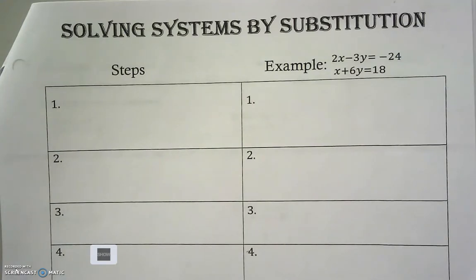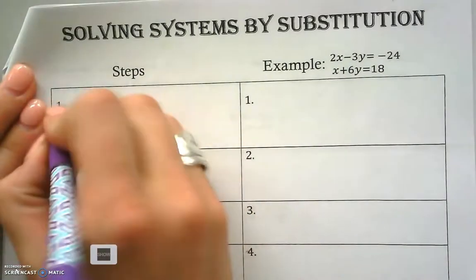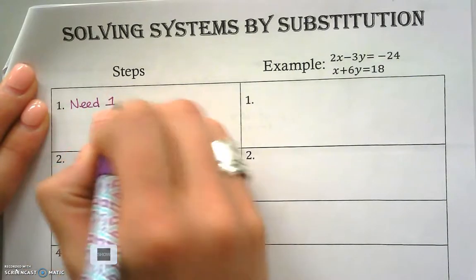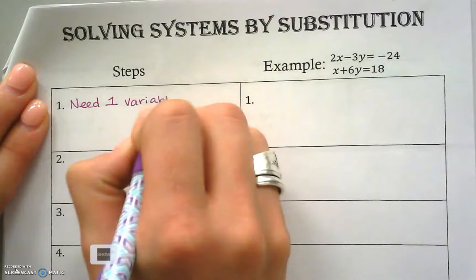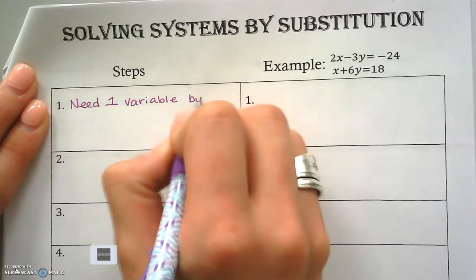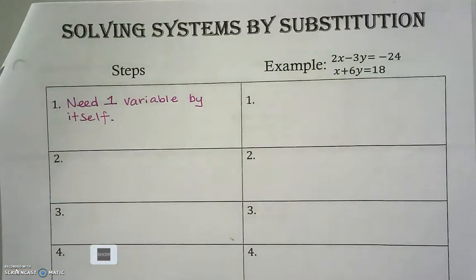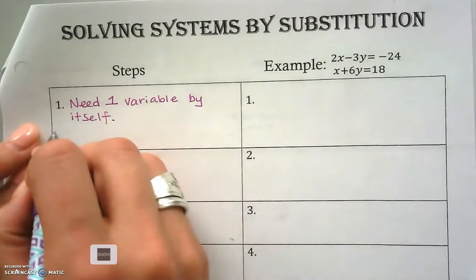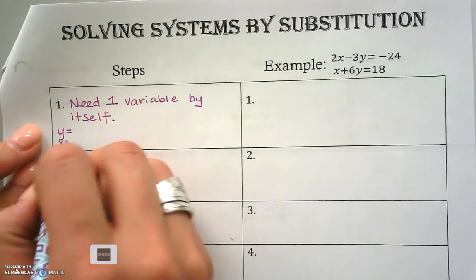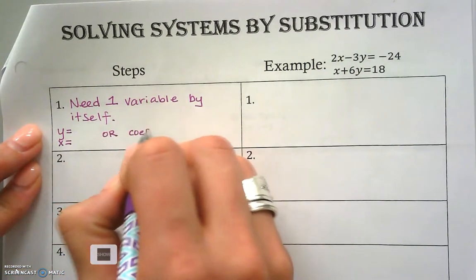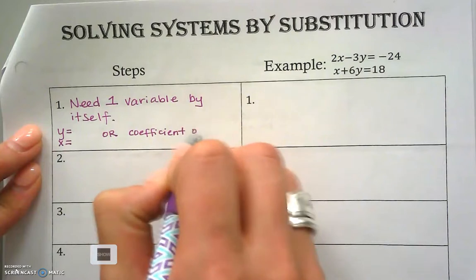When we solve by substitution, the biggest thing we are looking for is we need one variable by itself. What you're looking for is you're either looking for a y equals, an x equals, or a coefficient of one.